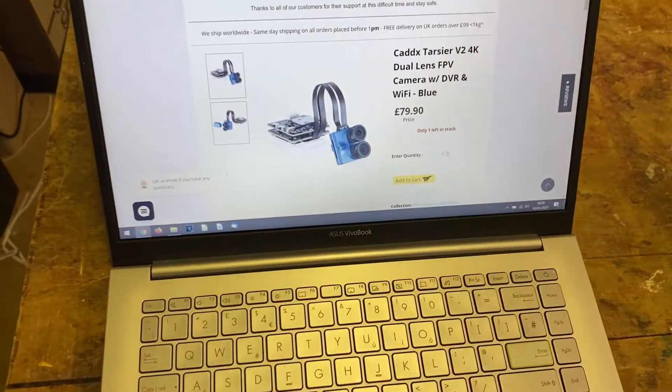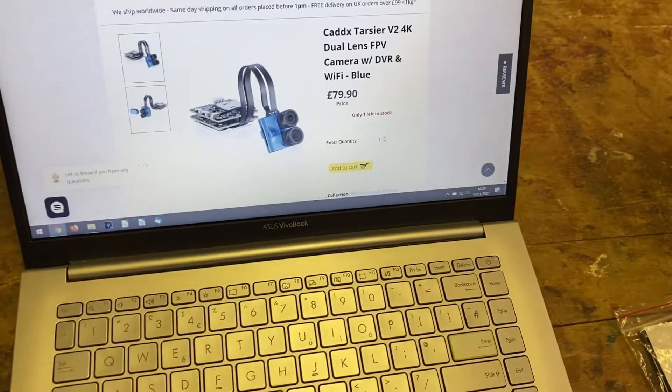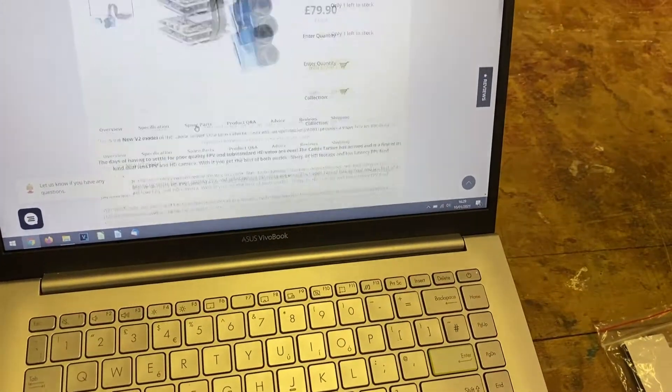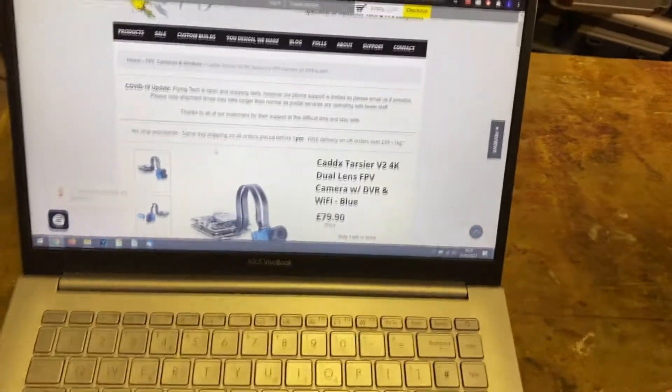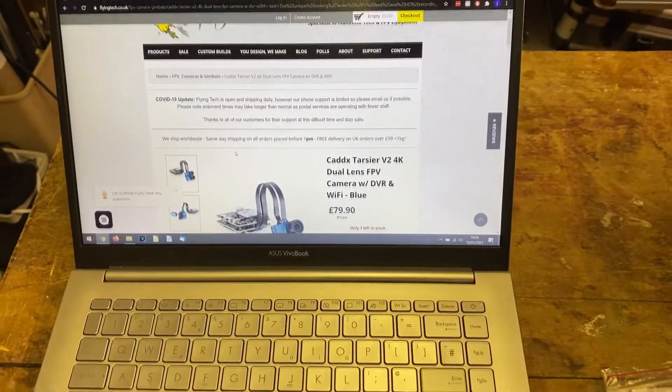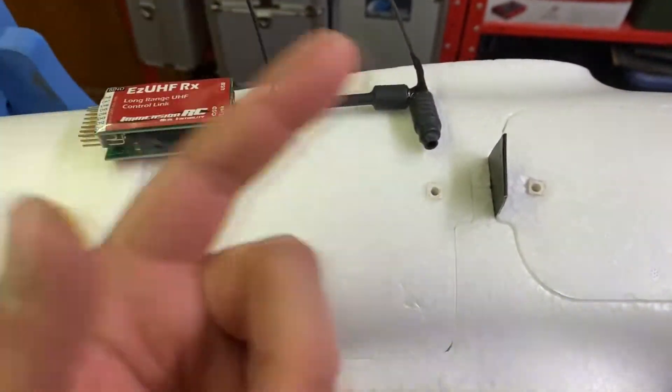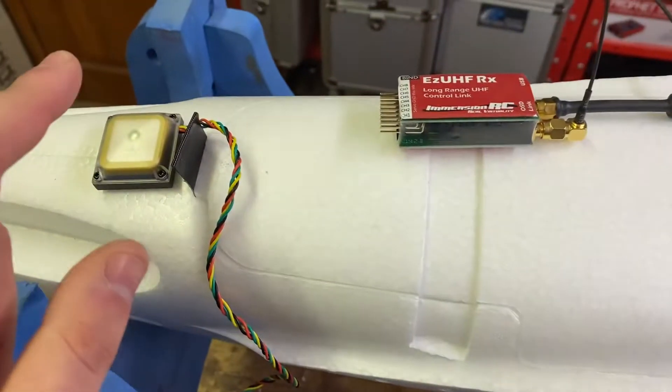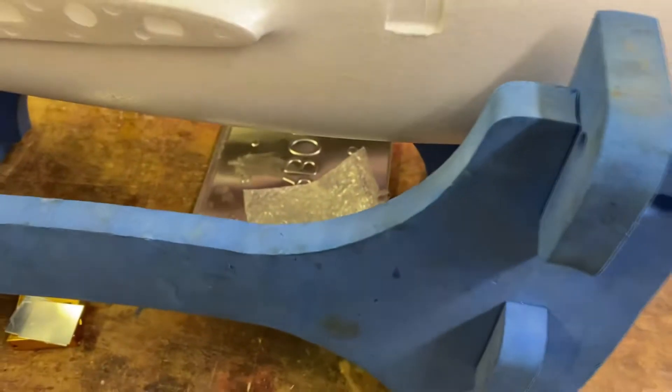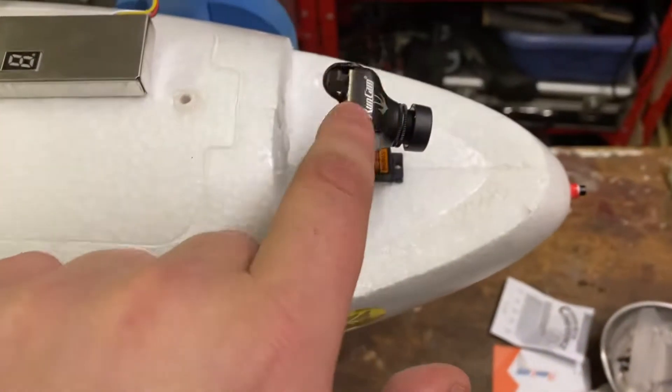So I'm going to go for the Caddx and double-check if there's nowhere cheaper. I will buy it from Flying Tech. I've bought from them before. And yeah, so that's going to replace this camera. The Swifts are great, but again, not enough to be recording. So yes, that's what we're going to do.